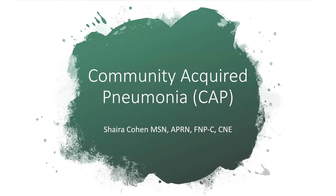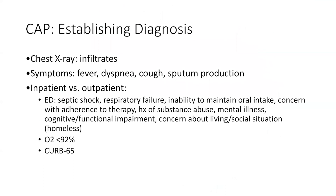So let's review. Remember, how I teach is keeping things as simple as possible. So let's dive into it. When establishing a diagnosis of community-acquired pneumonia, you have to order your chest x-ray. That will show you if it's tuberculosis, which will be upper consolidation, versus an actual pneumonia, which is the schmutz at the bottom of the lungs. Symptoms that will make you think of an infectious pneumonia: fever, dyspnea, cough, and clearly sputum production.